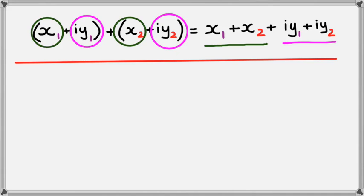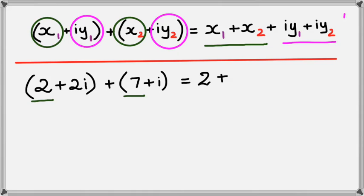Okay, let's have a look at a quick example. So if we were to have 2 plus 2i plus 7 plus i, what we do is we collect the real parts first. So in this case it'll be 2 and 7, and we write it up.